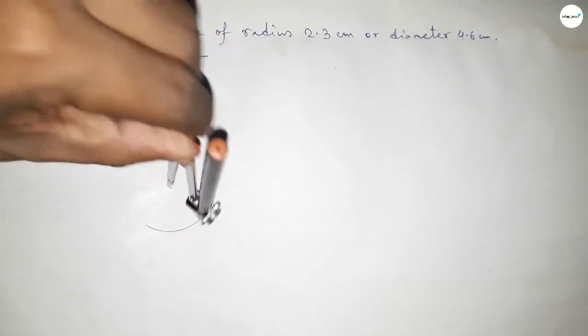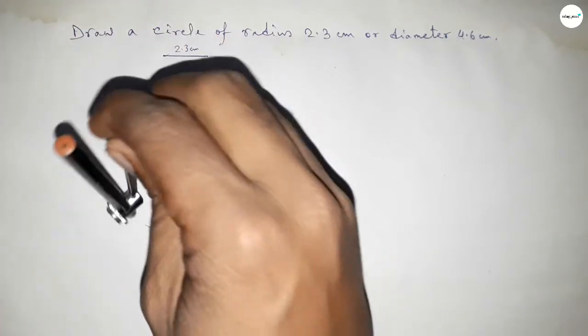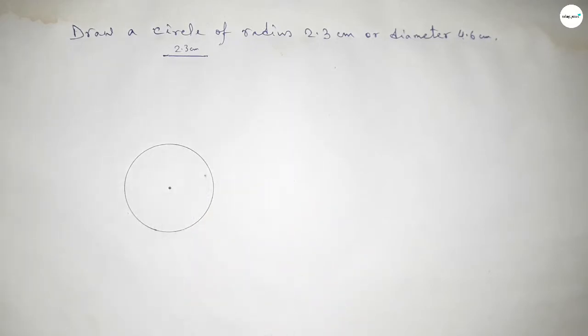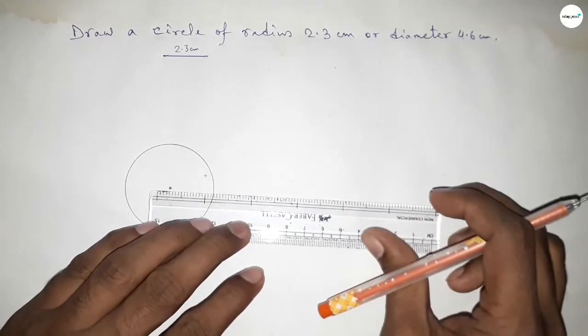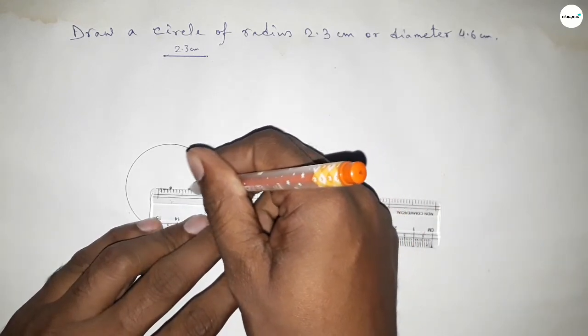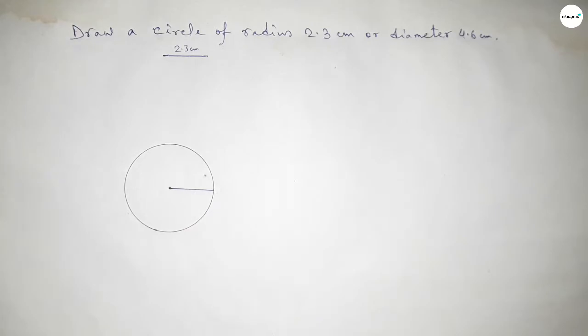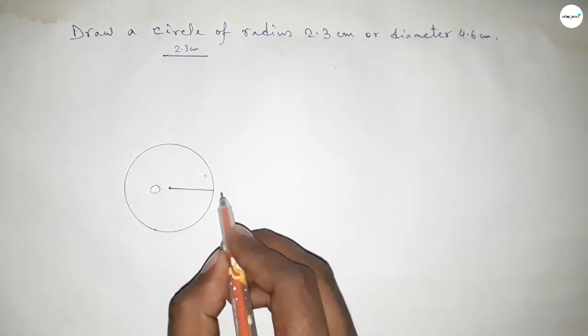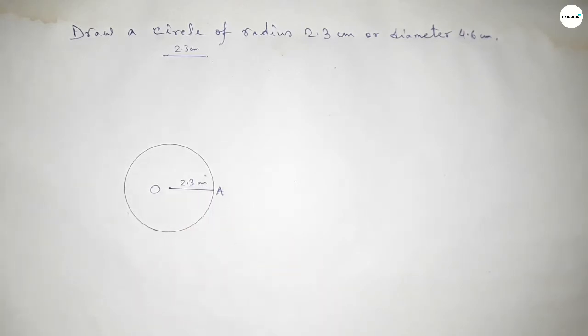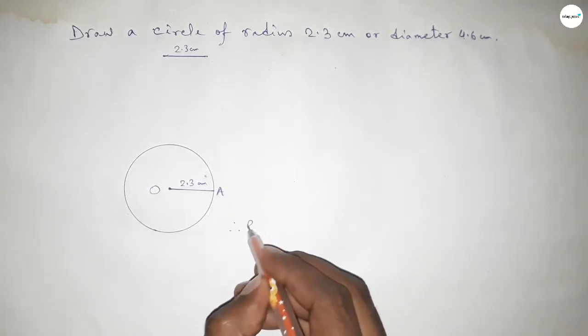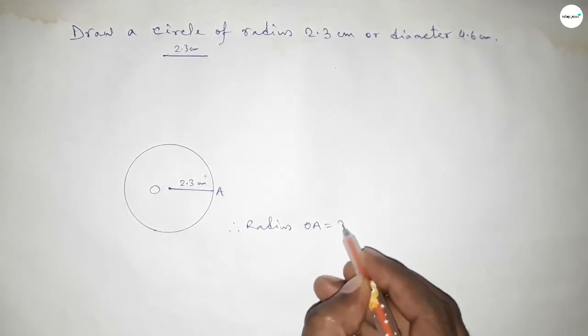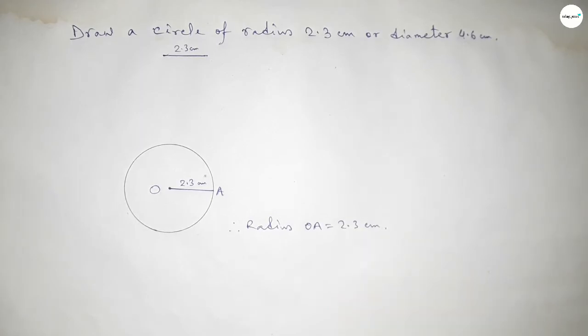Now joining this one and taking here the center O and here a point A. So OA equals 2.3 centimeter, therefore radius OA equal to 2.3 centimeter.